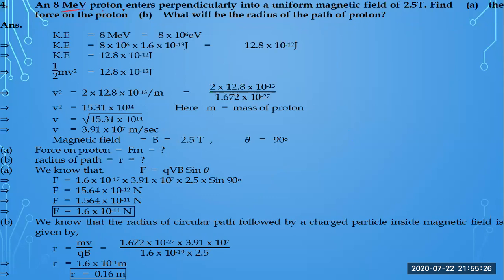A proton with 8 MeV of kinetic energy enters perpendicularly into a uniform magnetic field. We are asked to find point A, the force on the proton, and point B, the radius of the proton's path. The kinetic energy is 8 MeV, which converted is 8 multiplied by 10 to the minus 6 electron volts. Converting to joules by multiplying by the charge gives 12.8 multiplied by 10 to the minus 12 joules.